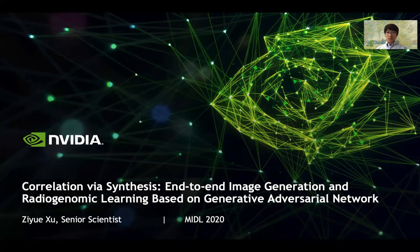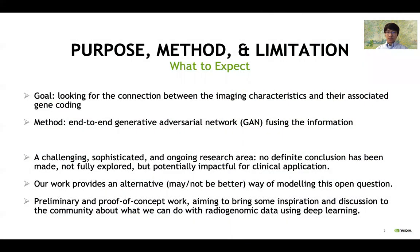Hello everyone, I'm Ziyue Xu from NVIDIA. It is my great pleasure to have this opportunity to share our work on image generation and radiogenomic learning. The method in this work is based on generative adversarial network. Before we get started, let me first give a brief overview of what to expect in this talk. The goal of this work is to look for connections, if they exist, between the imaging characteristics and their corresponding gene information.